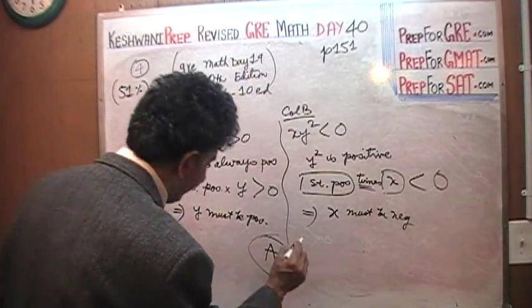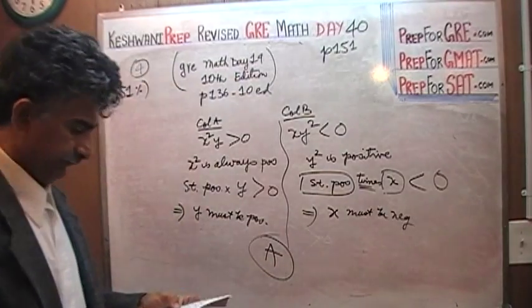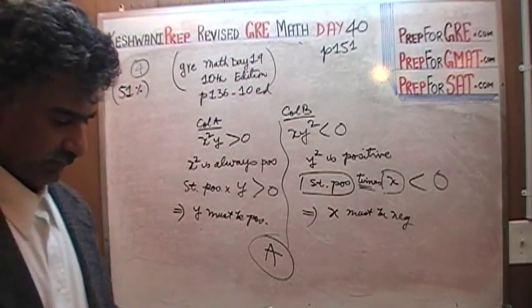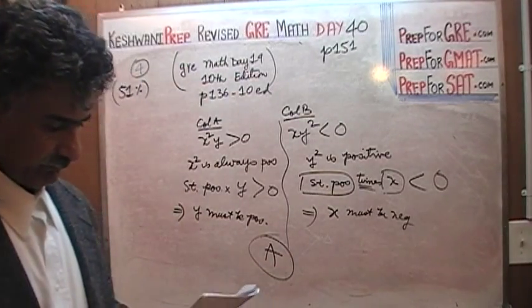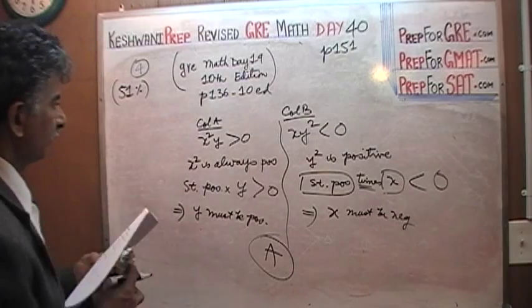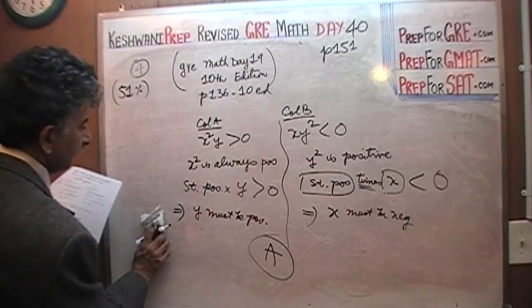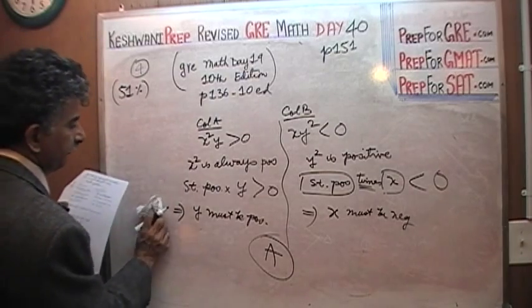Therefore, the quantity in Column A is bigger. That's it, we are done.